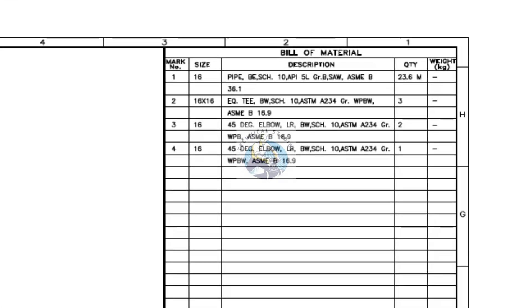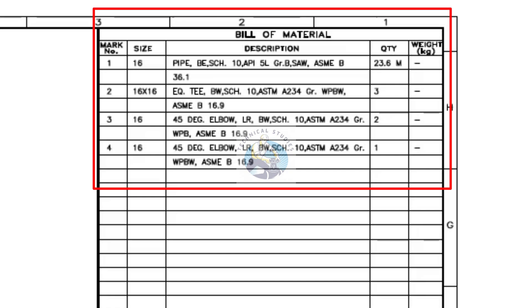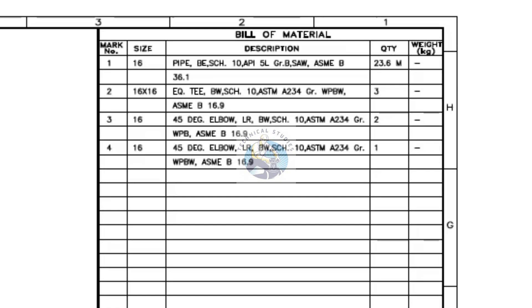Let's take a look at the bill of material list. In this list, you can find the mark number or item number, size, description, quantity, and other details.